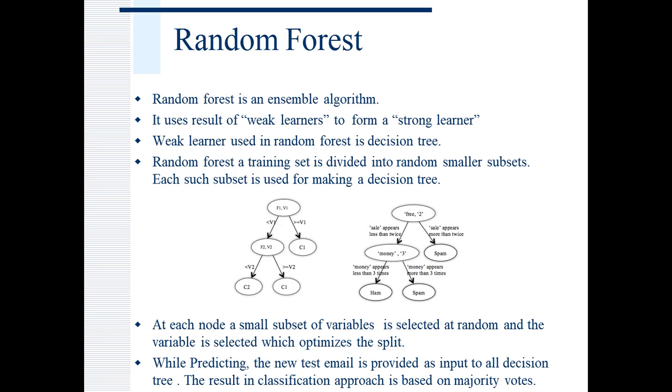Next, I have implemented random forest. It is an ensemble algorithm. That is, it is made up from a group of many weak learners. For random forest, weak learner is decision tree. For creating random forest, training data is divided into random smaller subsets and each creates a decision tree. This picture represents working of a decision tree. At each node decision is made based on feature at that node. Like if money appears more than three times, email is spam. Otherwise, it is a ham email. Random forest also uses same decision model. Input data is fed to all the decision trees and final classification is based on the majority vote.